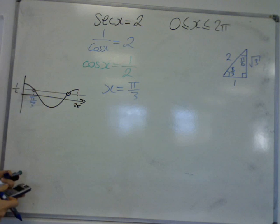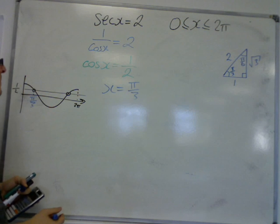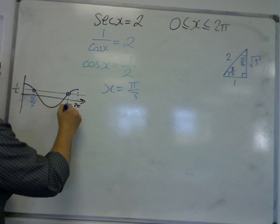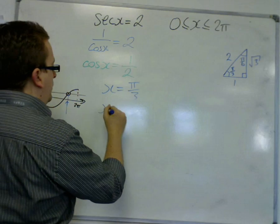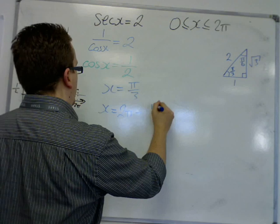Or you can just do inverse cos in your calculator, making sure you're in radians. Inverse cos of 1 half is π over 3, so we can find this value by doing x equals 2π take away π over 3.